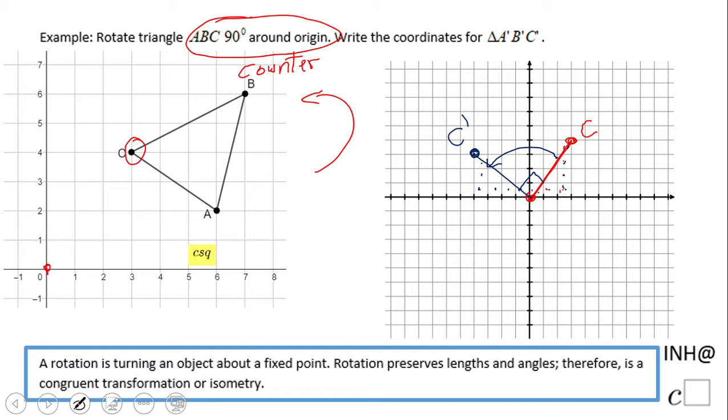Do one point first. Now let's see if we can come up with a rule. We started with C at (3, 4), and we ended up with C prime at (-4, 3).